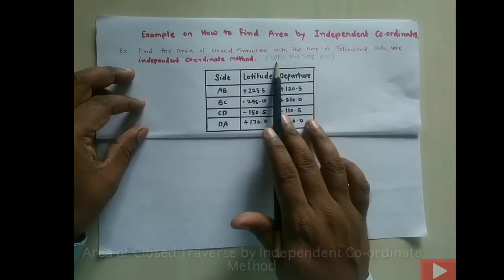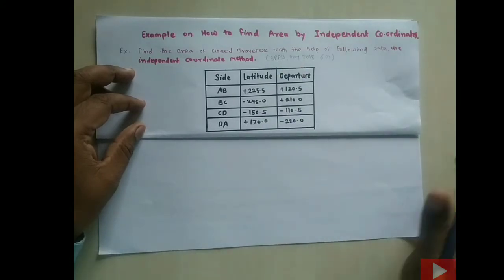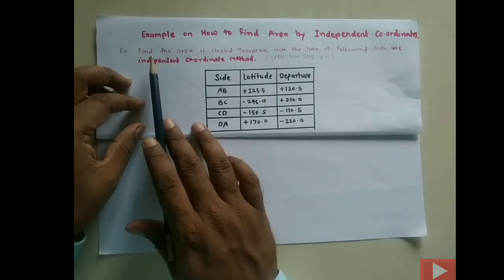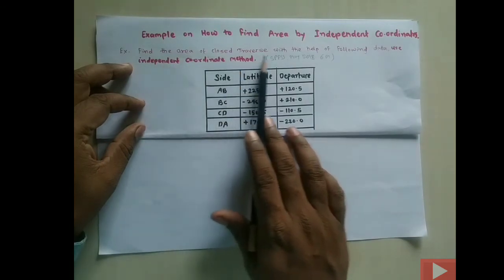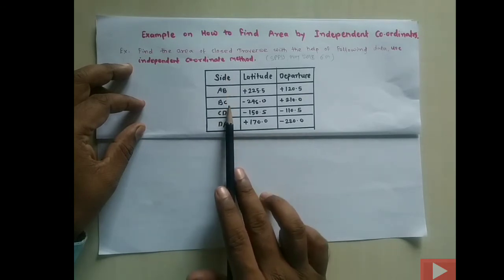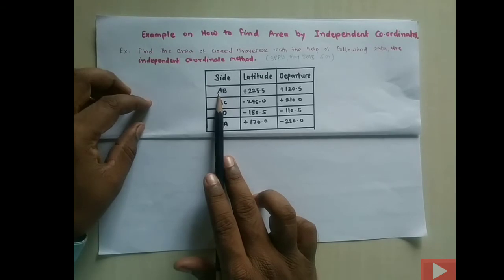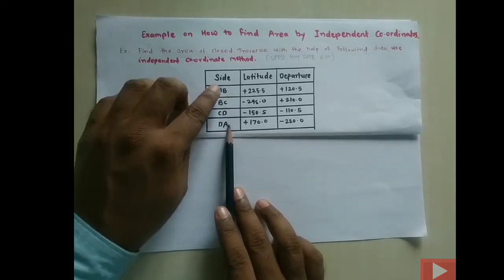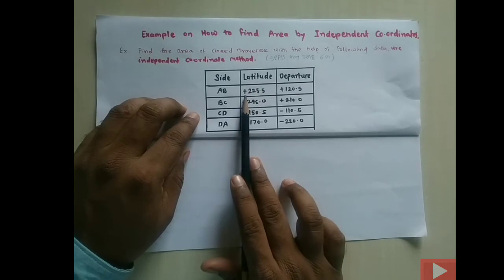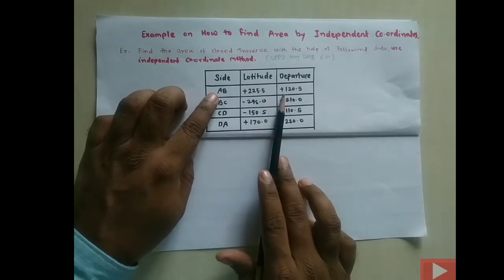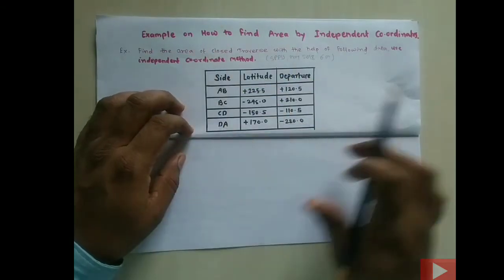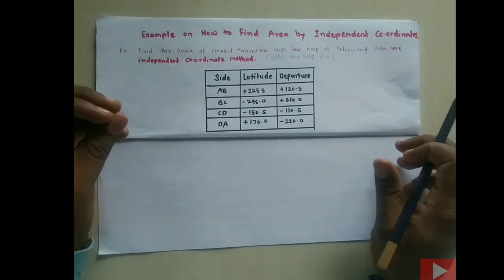This example is from Pune University May 2018, worth six marks. Read the example carefully. The problem states: find the area of a closed traverse with the help of the following data. The sides given are AB, BC, CD, and DA. The traverse starts with A and ends with A — that is, it is a closed traverse. The latitude and departure values are given in the next columns: latitude for AB is positive, BC is negative, CD is negative, DA is positive; and corresponding departures are also given.